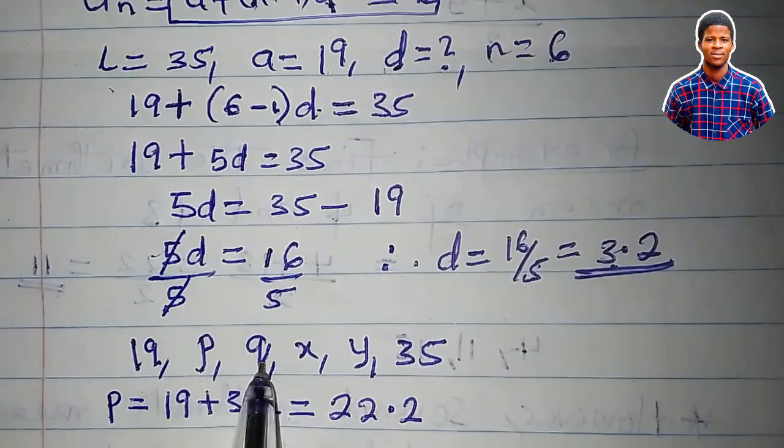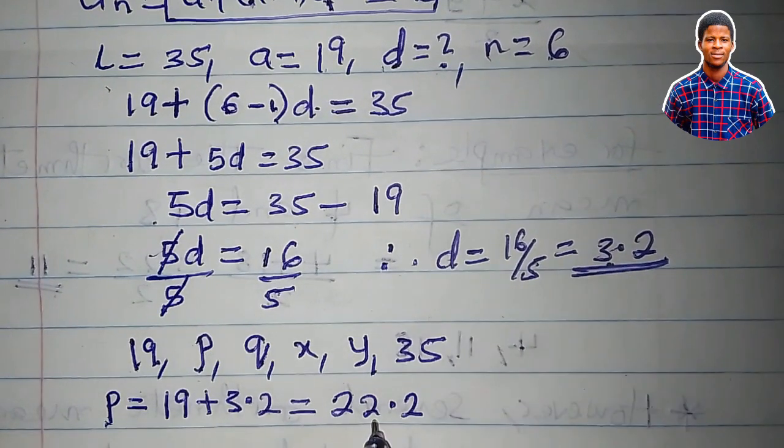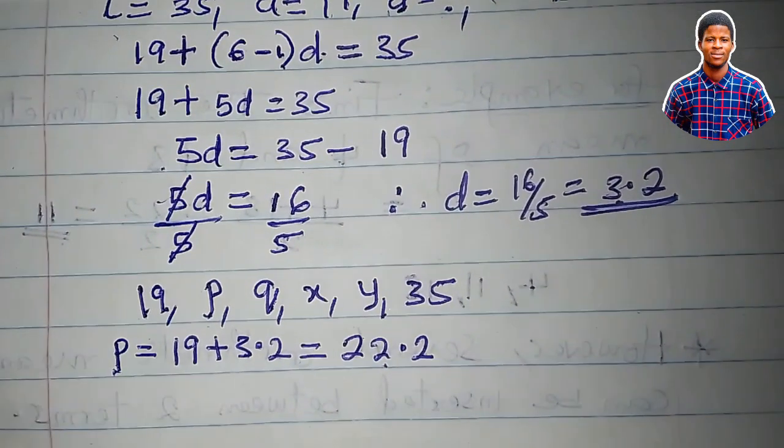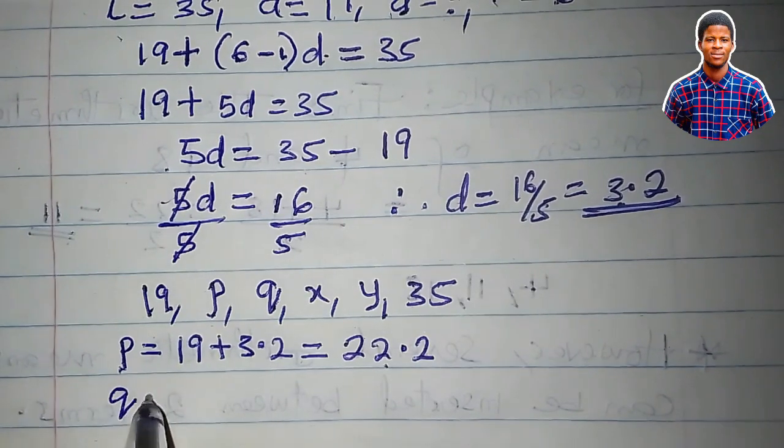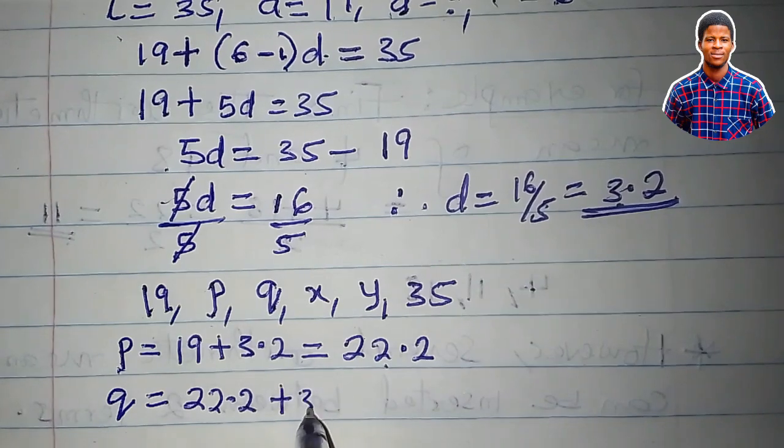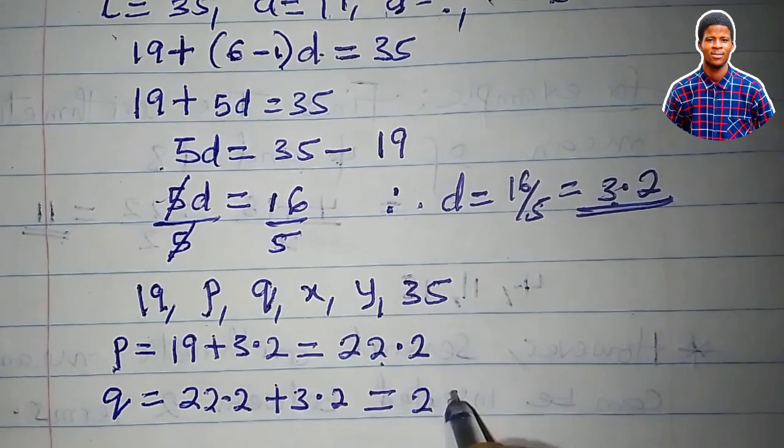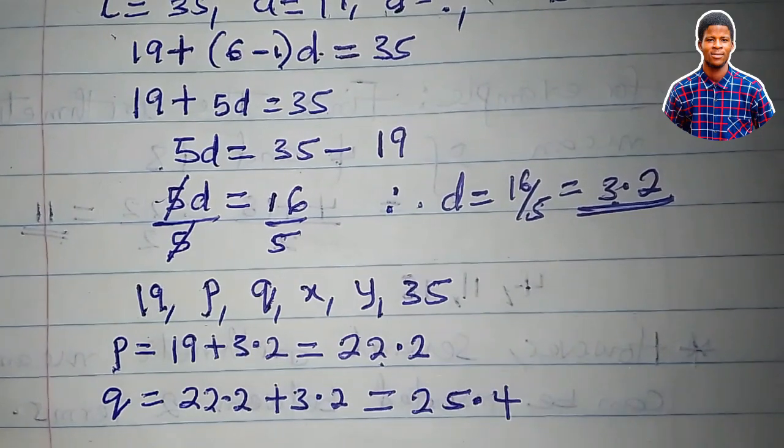To get Q now, I will add the common difference to P, which is now 22.2. So we say Q is equal to 22.2 plus the common difference, and that's equal to 25.4.